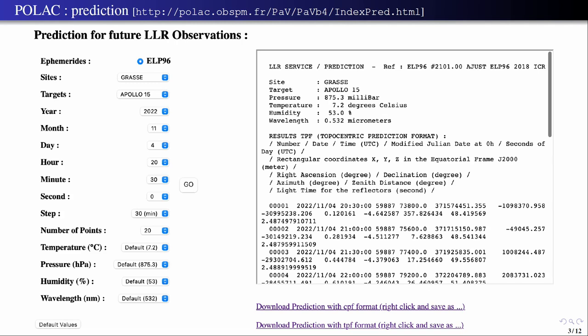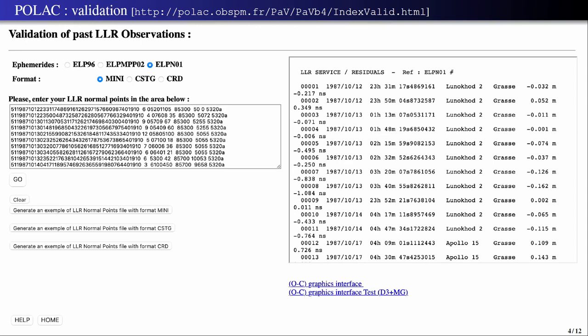We have also another one which is once again for observers, which is for validation of the observation. So if you are an observer you can put here in this box the observation you just did, you inform the format that you are using, here mini format, and you can click on go and you would obtain the residuals compared to a numerical prediction here in this column. You can also plot this residual to see how it's going to fluctuate with respect to the numerical prediction.